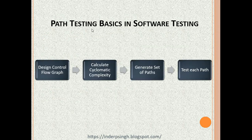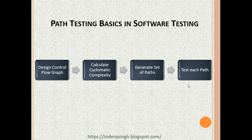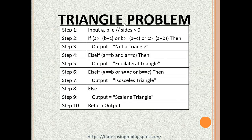Path testing basics in software testing: this is the path testing process. We first design the control flow graph, then calculate the cyclomatic complexity using the formula — it's a simple formula. Then we generate the set of paths and test each path. Now let us see path testing in software testing with an example.